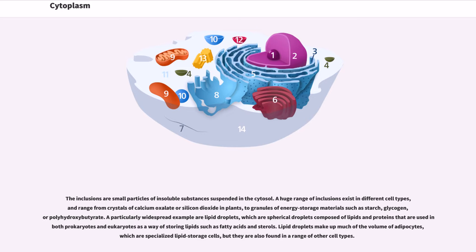A particularly widespread example are lipid droplets, which are spherical droplets composed of lipids and proteins that are used in both prokaryotes and eukaryotes as a way of storing lipids such as fatty acids and sterols. Lipid droplets make up much of the volume of adipocytes, which are specialized lipid storage cells, but they are also found in a range of other cell types.